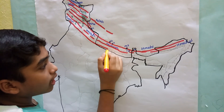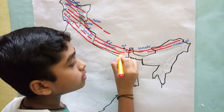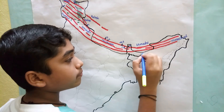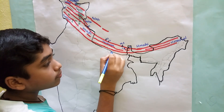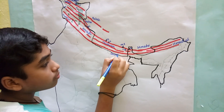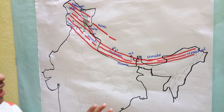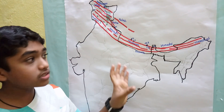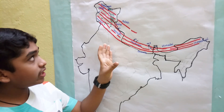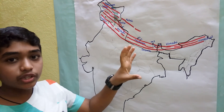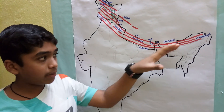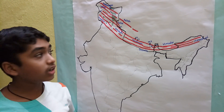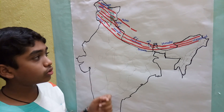Shivalik, or the Outer Himalaya, is the southernmost range of the Himalayas. The longitudinal valleys situated between Himachal and Shivalik are called duns. Some important duns are Dehradun, Kotlidun, and Patlidun.